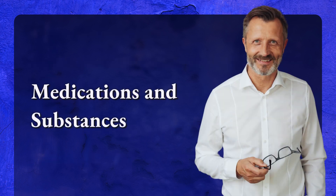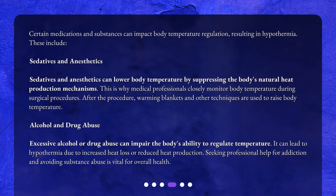Medications and substances. Certain medications and substances can impact body temperature regulation, resulting in hypothermia. These include sedatives and anesthetics, which can lower body temperature by suppressing the body's natural heat production mechanisms. This is why medical professionals closely monitor body temperature during surgical procedures. After the procedure, warming blankets and other techniques are used to raise body temperature.